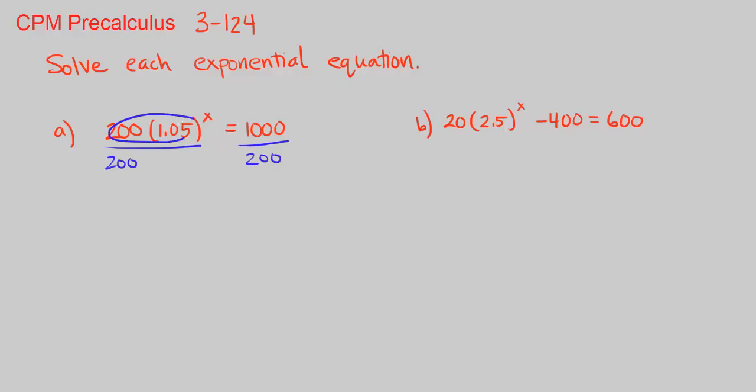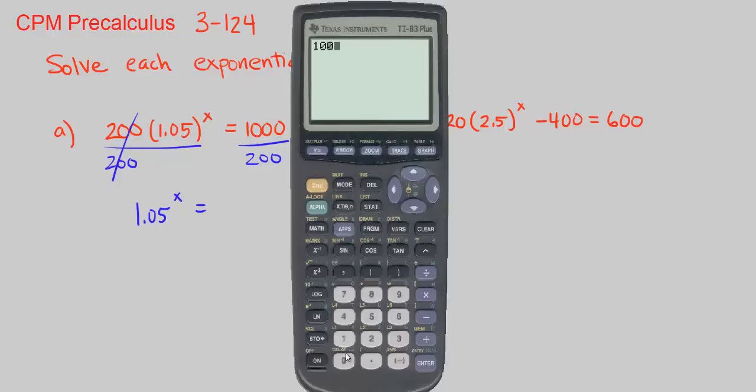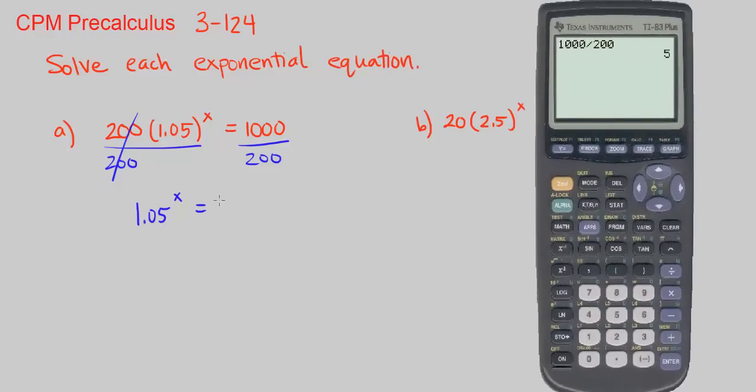We cannot multiply these together because this one is to the exponent of 1. 200 is going to cancel out here. We have 1.05 to the power of x equals 1000 divided by 200. You can use your calculator if you would like. So that's going to give us just a clean answer of 5.